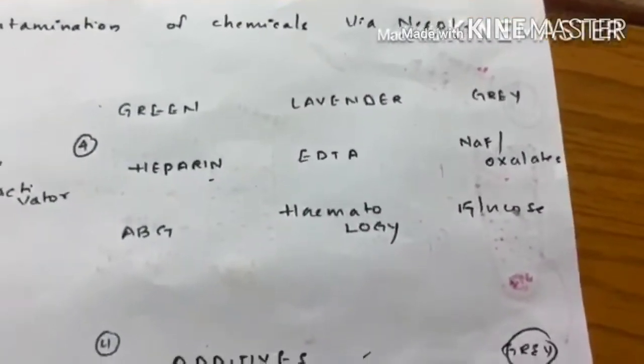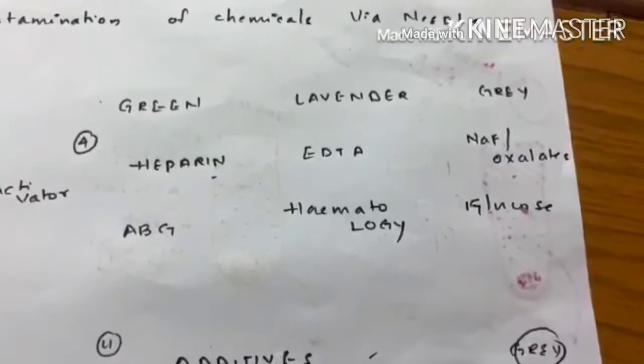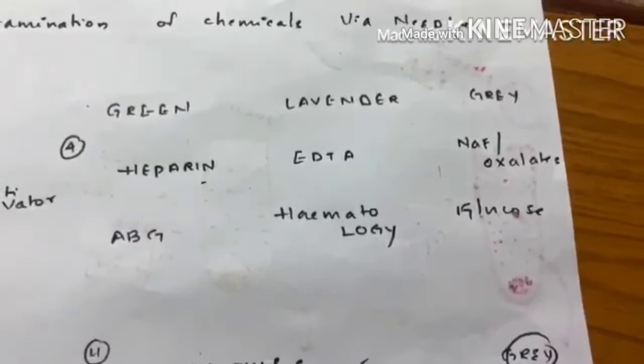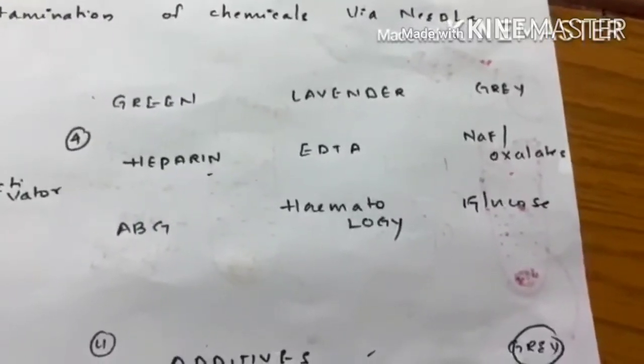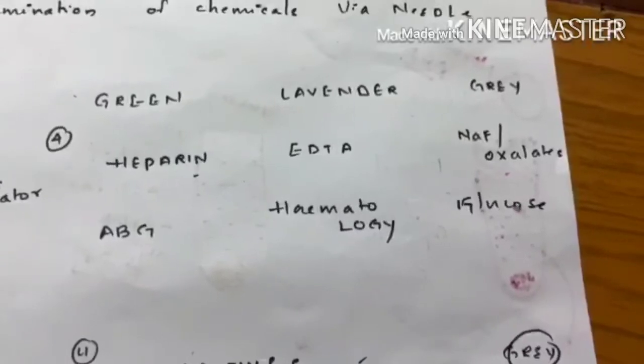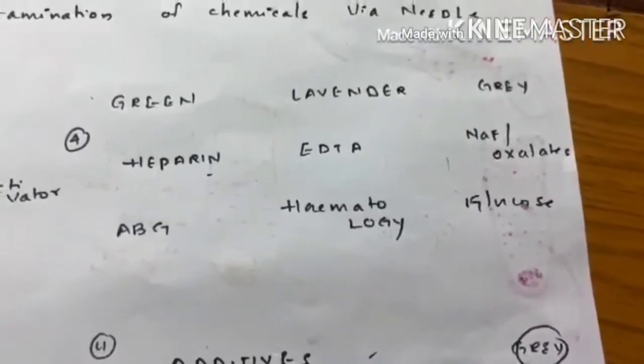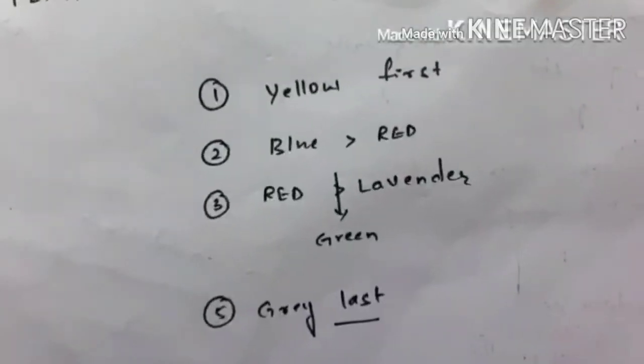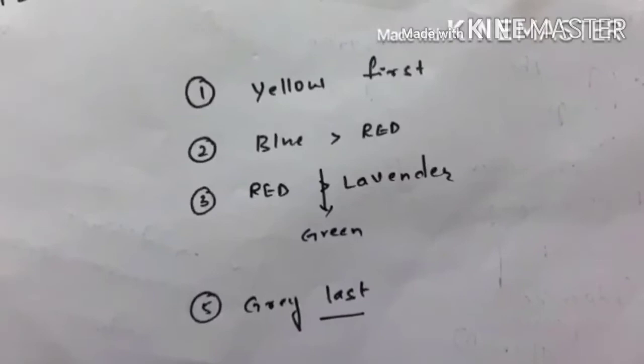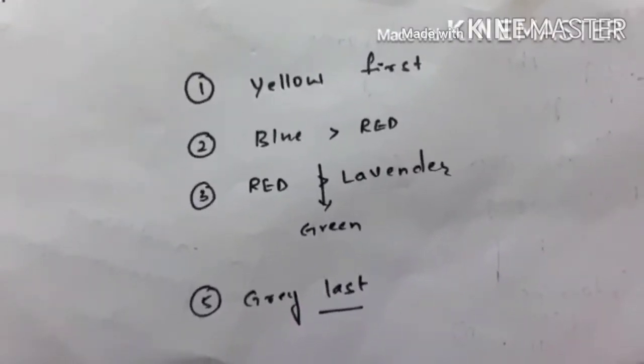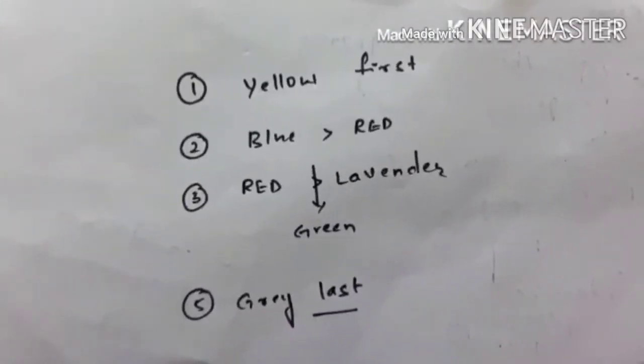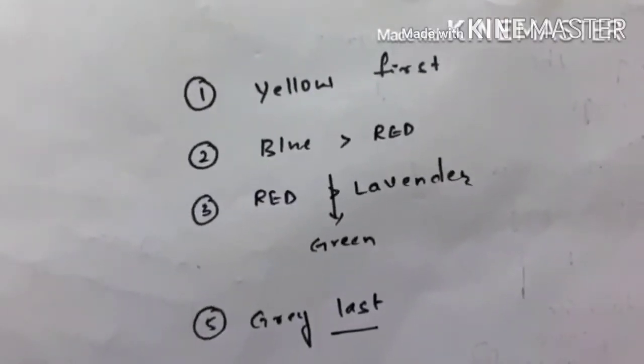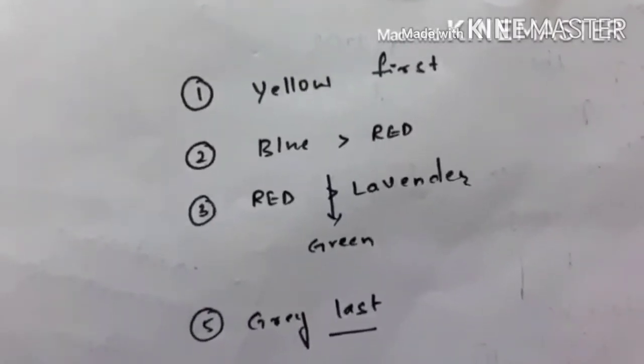Grey is completely different from all these ones. Let us remember glucose because it is a glycolysis inhibitor. It has nothing much to do with coagulation and anticoagulation. So let us remember it as last one to draw. We already know that culture bottles are first, yellow first. And then glycolysis inhibitor as last, grey last. In between not to disturb coagulation studies, blue first then red. And not to disturb potassium.